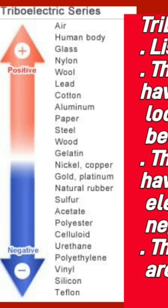In this list, those near the top have more tendency to lose electrons, or low electron affinity, and they become positive in charge. For example, human body, hair, and glass.